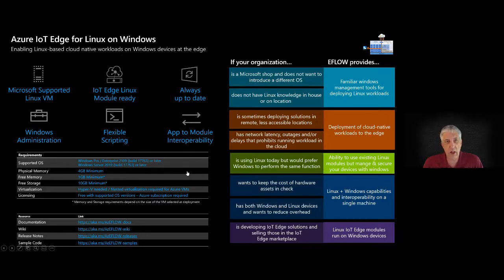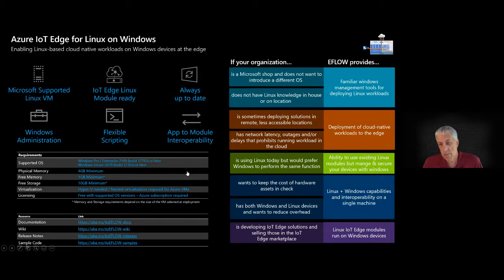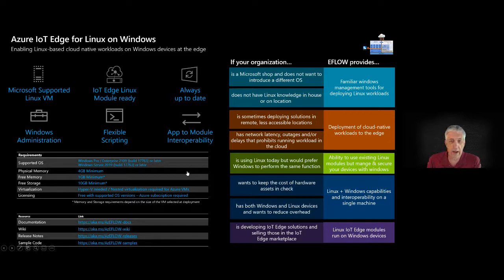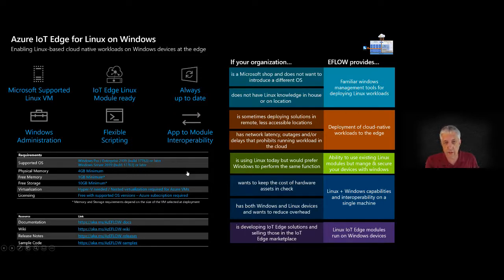So you can think of it as: WSL is for R&D purposes where you're building an application, and eFlow is for production purposes where you're deploying a workload. From a workflow perspective, you might start off building the code for your module in WSL, and then once you package that into a Docker container, you would deploy it to eFlow.